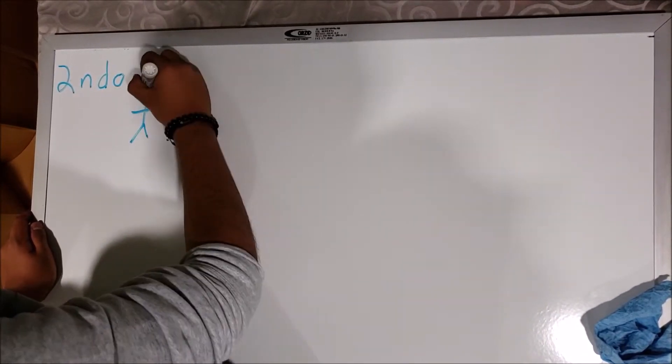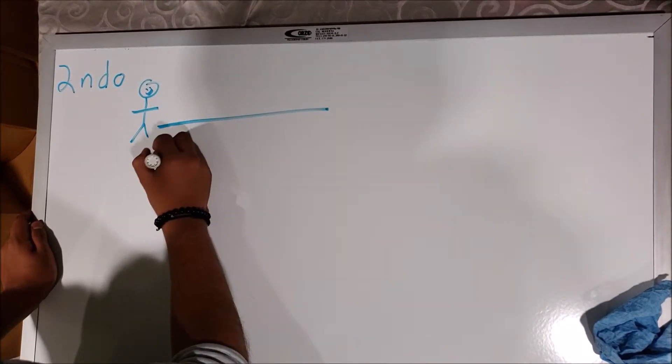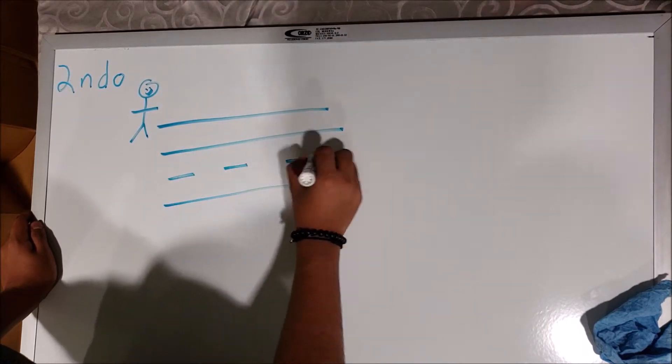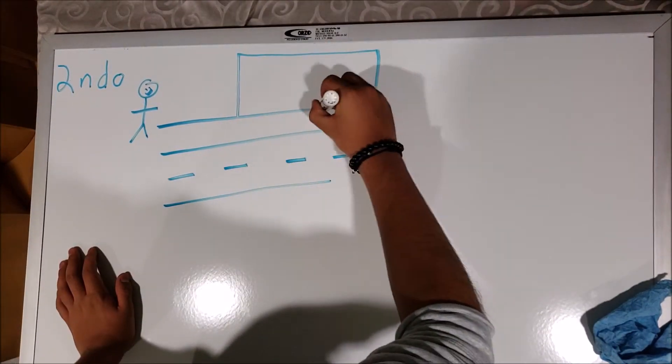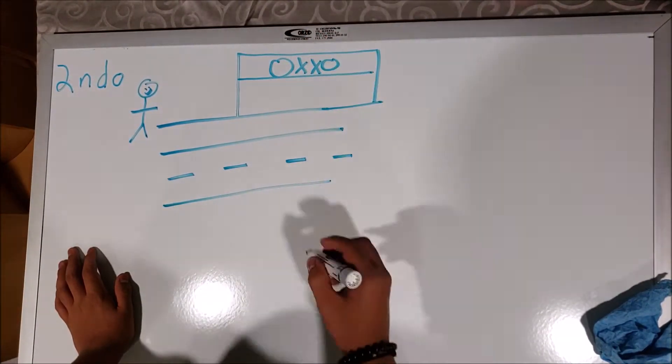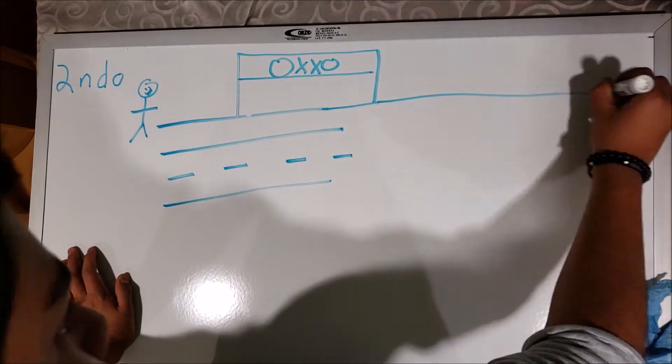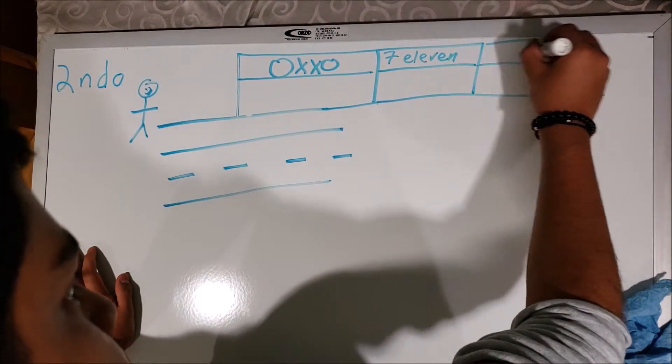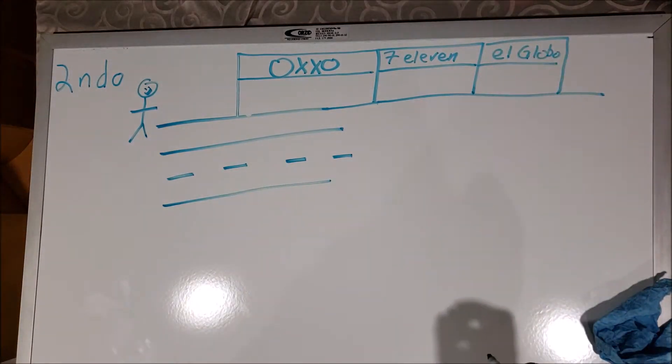Como segunda opción, recurrimos a caminar por nuestra colonia y en los establecimientos de marcas comerciales, como Oxxo, Seven o El Globo, preguntar por vacantes, pues es comúnmente conocido que en lugares como estos trabajan jóvenes. Al igual que con los empleos en los periódicos, nos rechazaron por ser menores de edad.